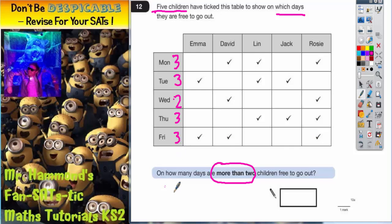So the question is how many of these five days have more than two children free to go out? Well three is more than two. On Tuesday three is more than two. On Wednesday it is two, so that is not more than two. Thursday three is more than two. Friday three is more than two. So if you count up the days that we tick where it's more than two it's one, two, three, four. So the answer there is four days.